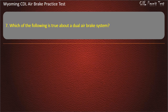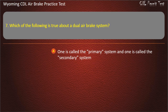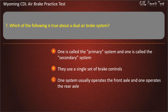Question 7. Which of the following is true about a dual-air brake system? One is called the primary system and one is called the secondary system. They use a single set of brake controls. One system usually operates the front axle and one operates the rear axle.